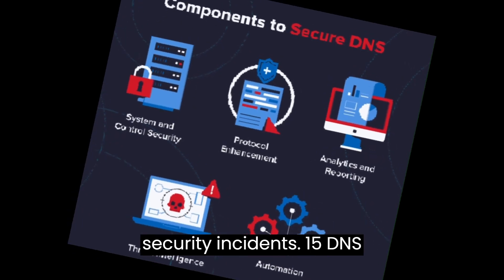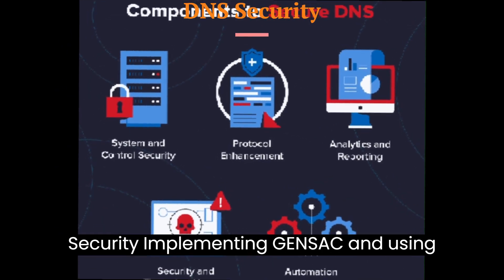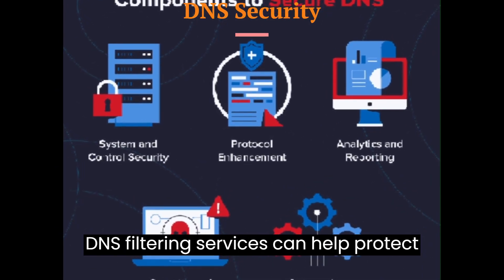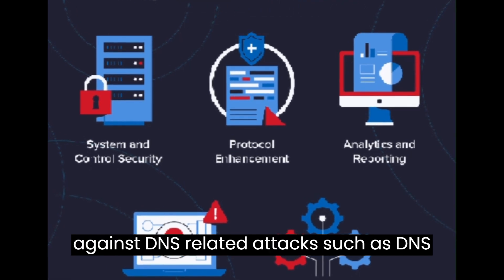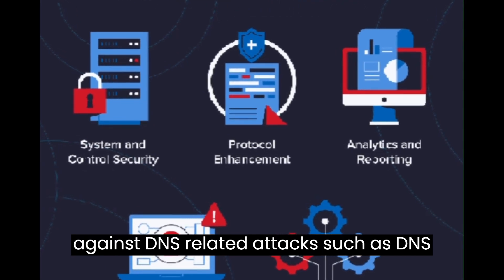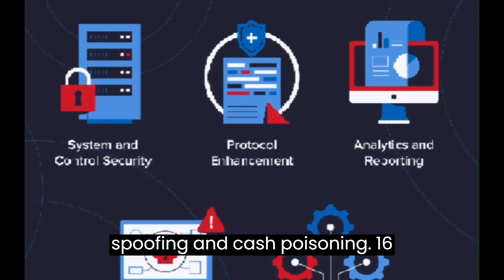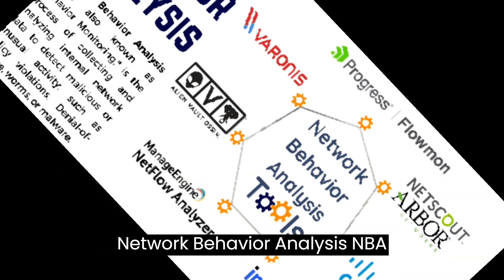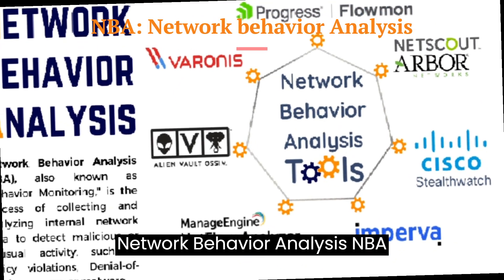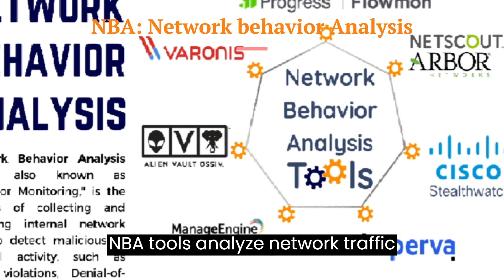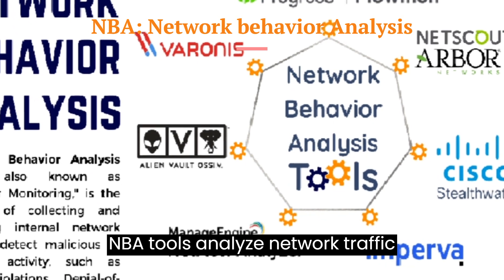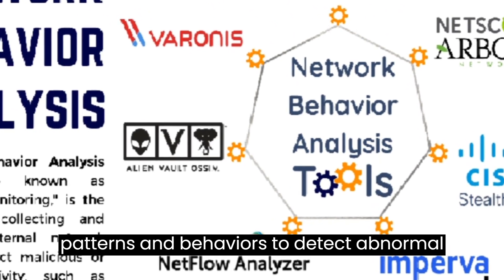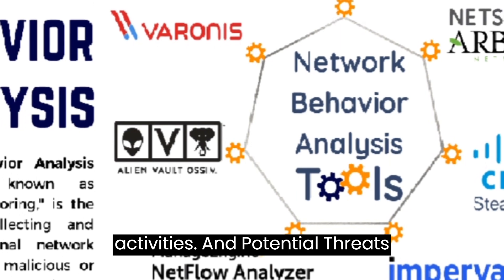15. DNS security. Implementing DNSSEC and using DNS filtering services can help protect against DNS-related attacks, such as DNS spoofing and cache poisoning. 16. Network Behavior Analysis, NBA. NBA tools analyze network traffic patterns and behaviors to detect abnormal activities and potential threats.